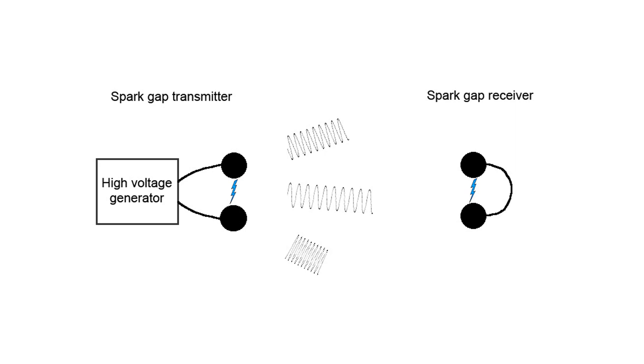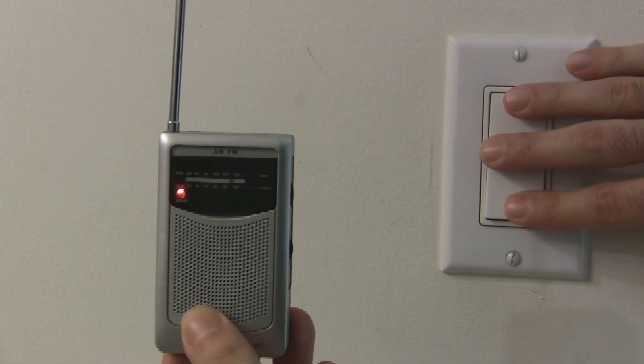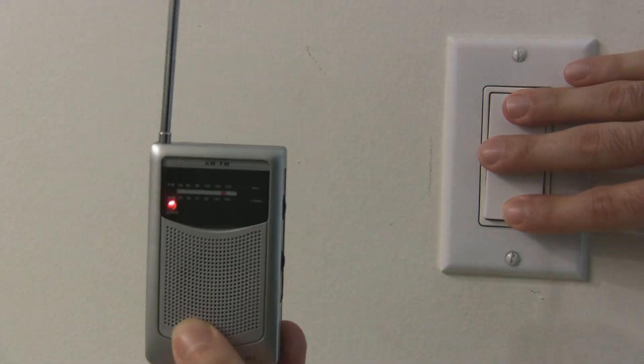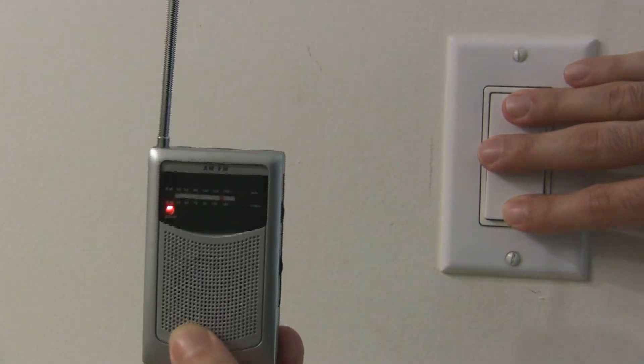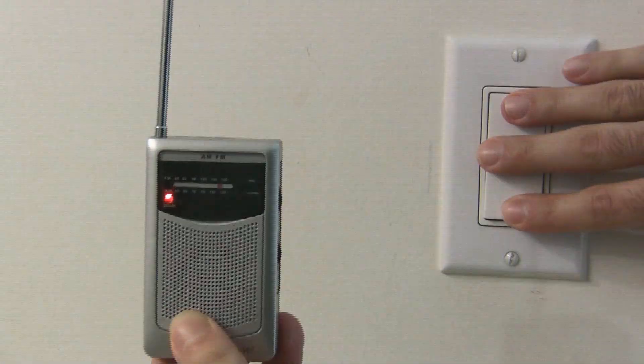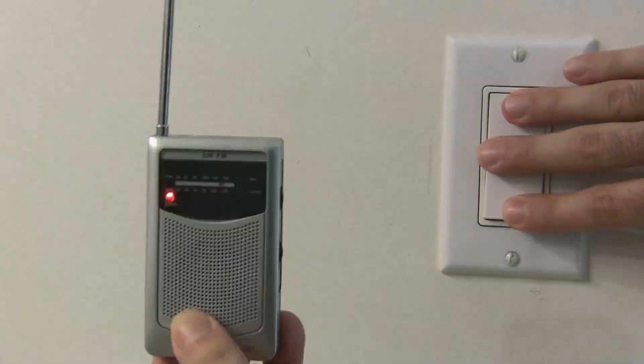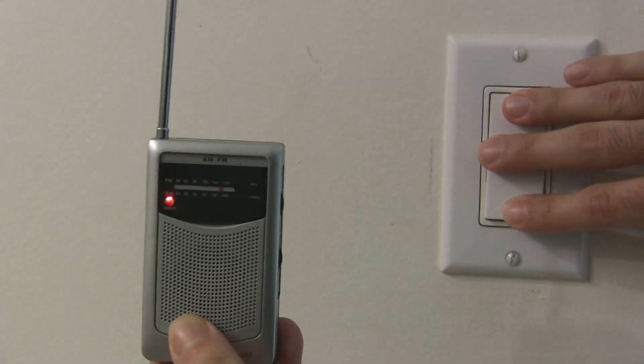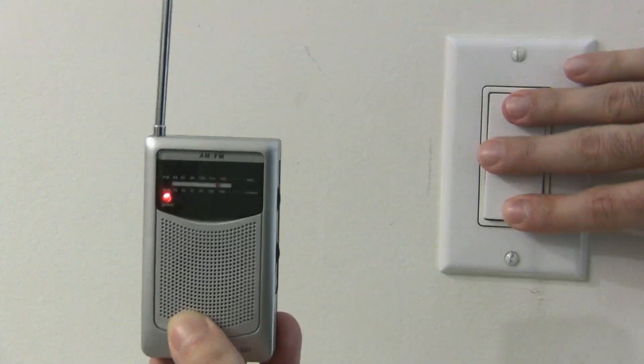You can replicate the experiment right at home with an AM radio and a light switch. Just tune the radio to a quiet station and flip the light switch on and off. The little sparks generated when you flip the mechanical switch create a little burst of electromagnetic radiation and your AM radio detects it as a little popping noise.